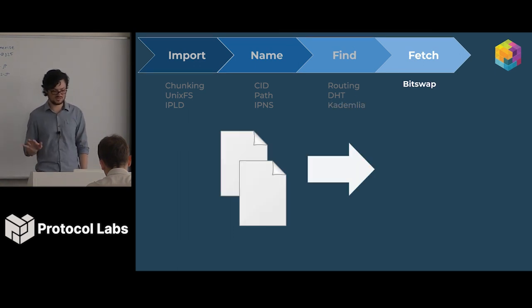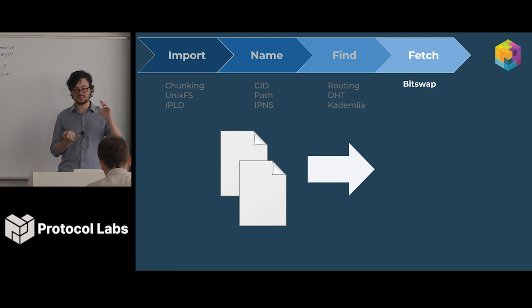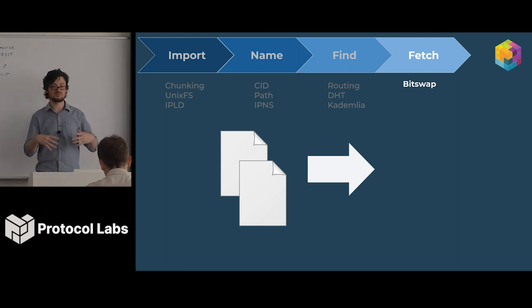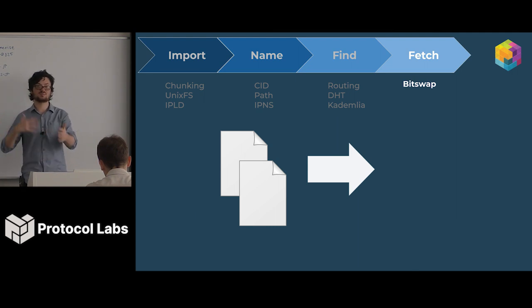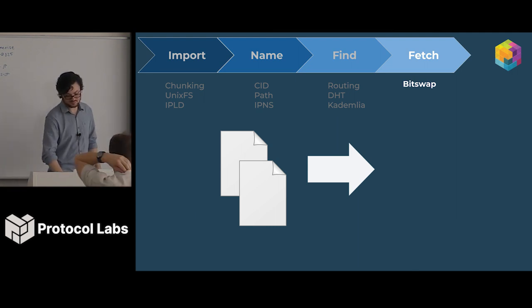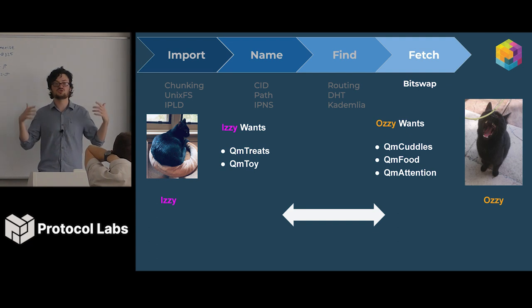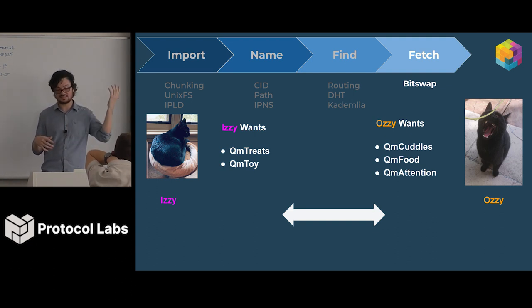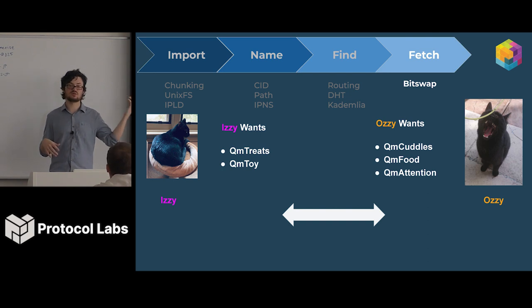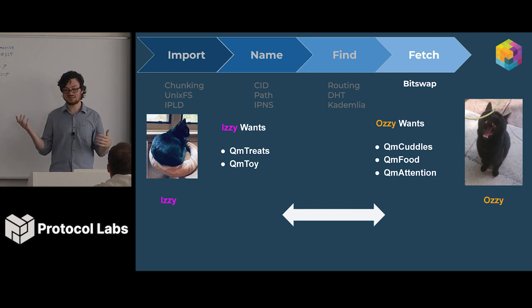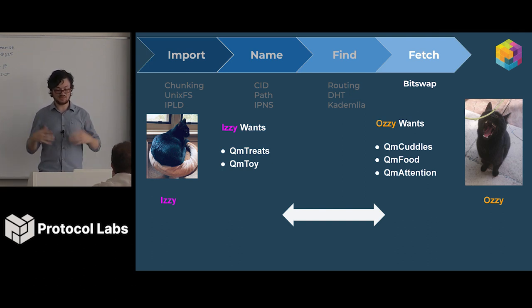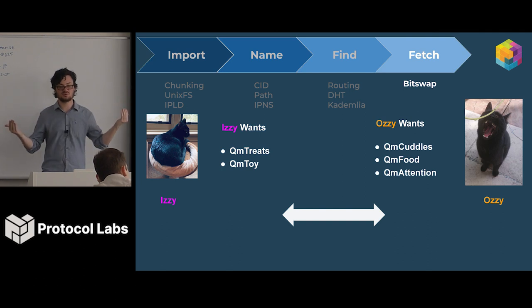Final part — this is how we actually fetch data. We've covered how to put data into IPFS, how to name it, how to find it. Now, how do we ask peers to give us the data? We use BitSwap. The way it works is using want lists — a want list is literally just a list of things you want. In this case, one of my cats, Izzy, wants personal space. My other cat, Ozzy, wants cuddles, blood, and food. They compile those lists and tell all their connected peers about the things they want.